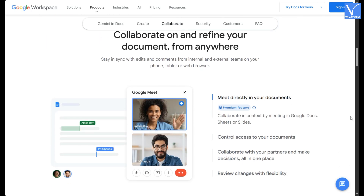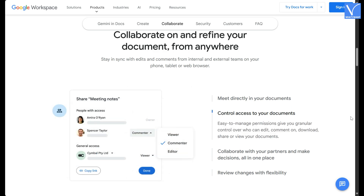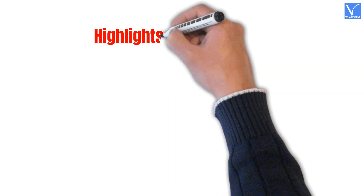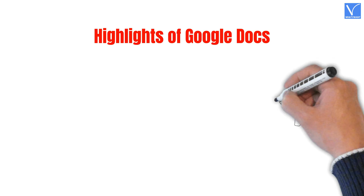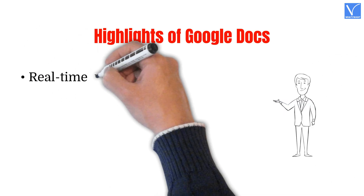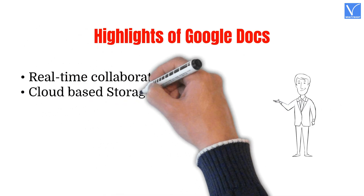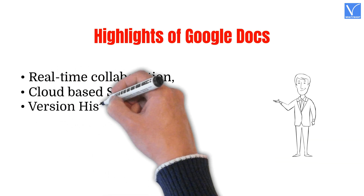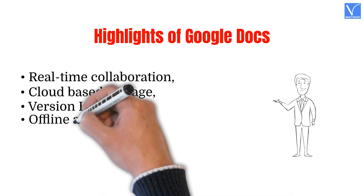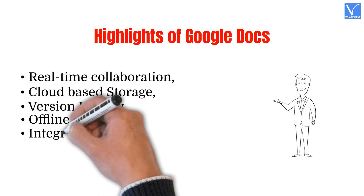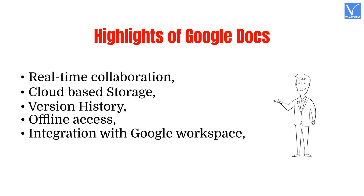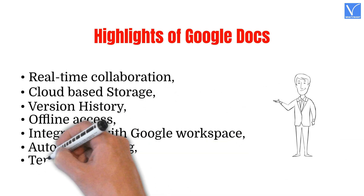Multiple users can work on the same document simultaneously, with changes automatically saved and tracked. It's widely used for team collaboration and document sharing, and is accessible through a web browser or mobile app. Highlights of Google Docs: Real-time collaboration, cloud-based storage, version history, offline access, integration with Google Workspace, automatic saving, and templates library.